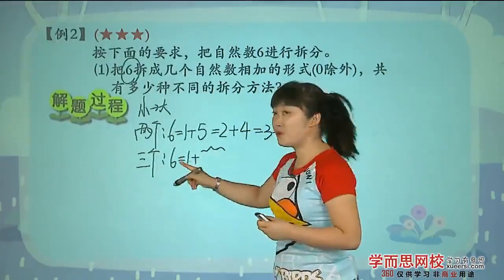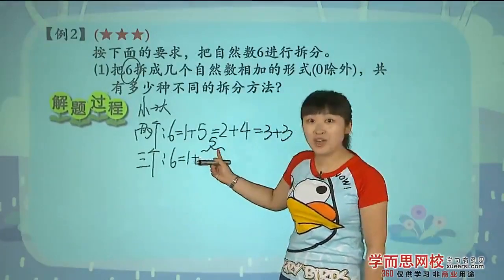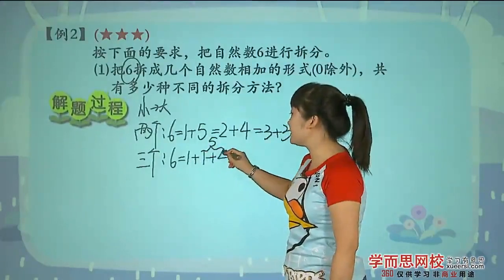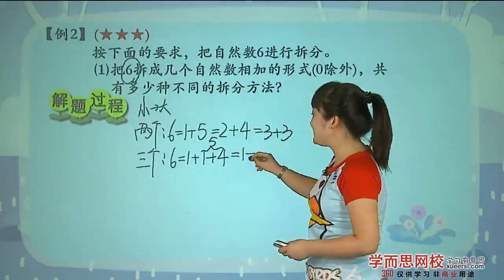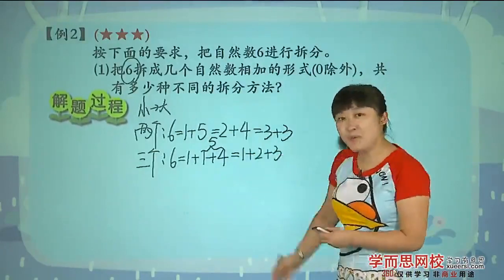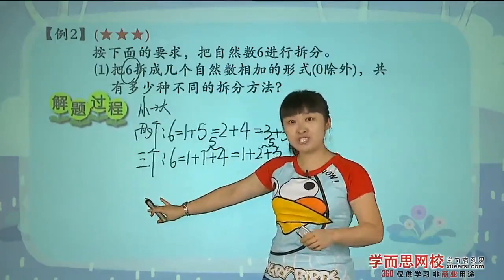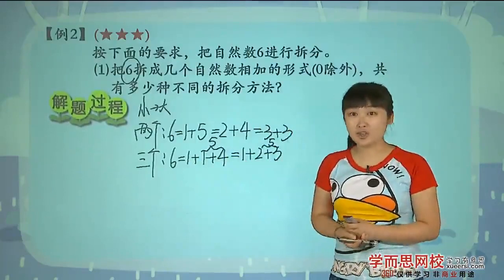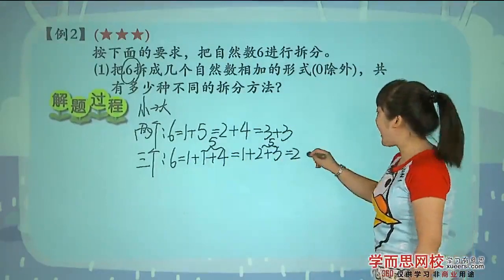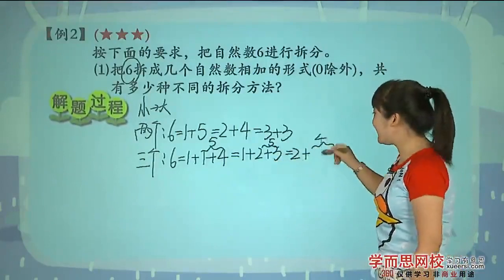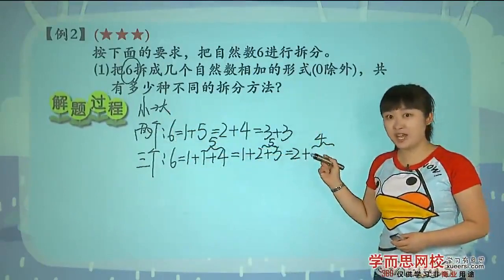接下来我们该想什么,该想把六分成三个数。六等于,脑子里面先想一加几等于六呢,一加五等于六。所以接下来我们的任务该要来拆一拆这个五了。前面是一,我先想一加四,再往下走,这五拆完了吗,没拆完,继续去拆,一加上二加三。